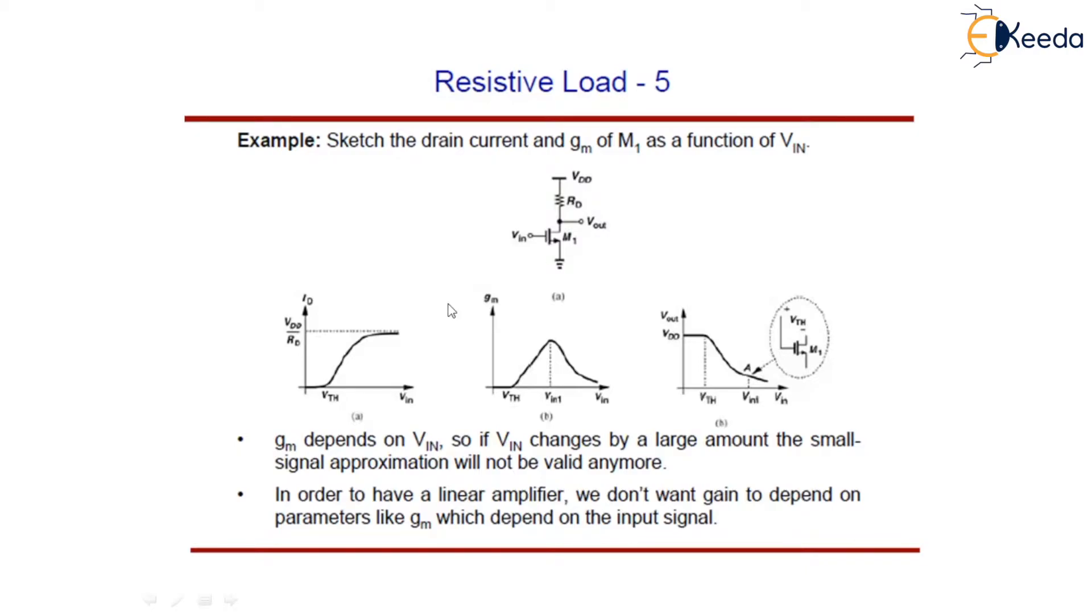What we have seen earlier is that the drain current becomes significant for VIN greater than VTH. When the input voltage becomes greater than the threshold voltage, the drain current becomes significant, and below this, when VIN is less than VTH, id becomes zero. This eventually approaches VDD upon Rd.